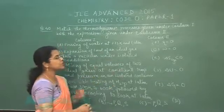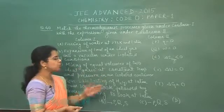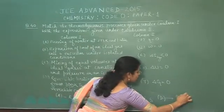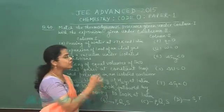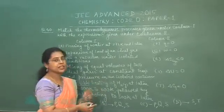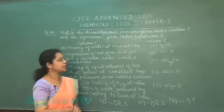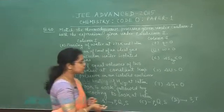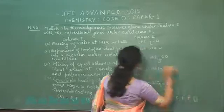Now among those given here, state functions are delta U and delta G - both should be 0, so D should be correctly matched with S and T. This is reversible heating, so its path function values will also be 0. Now path functions are Q and W, they should be 0, so P is also correct and Q is also correct.